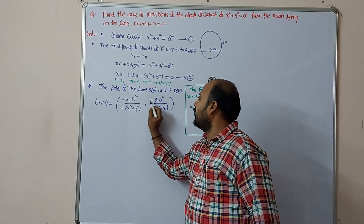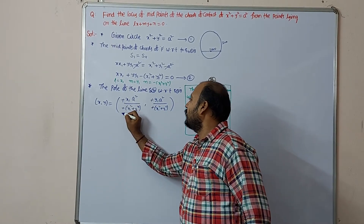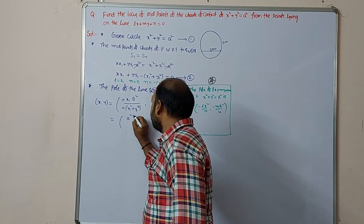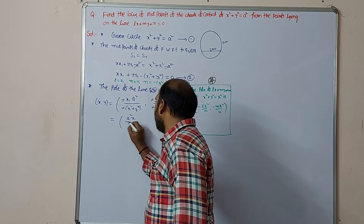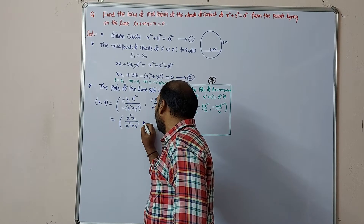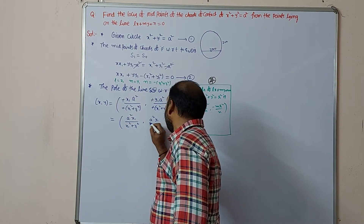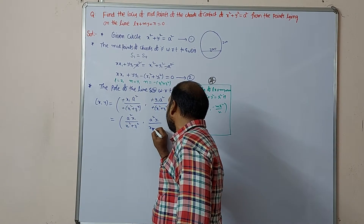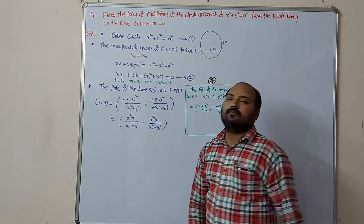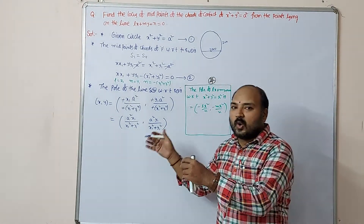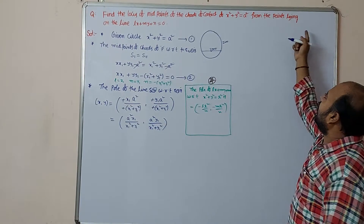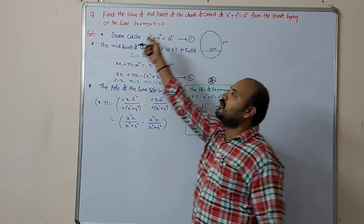Working through the signs — minus times minus cancels — we get the pole coordinates as (a²x1 / (x1² + y1²), a²y1 / (x1² + y1²)). This pole lies on the given line, since the point comes from points lying on that line.